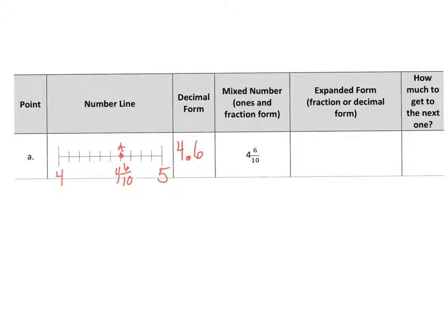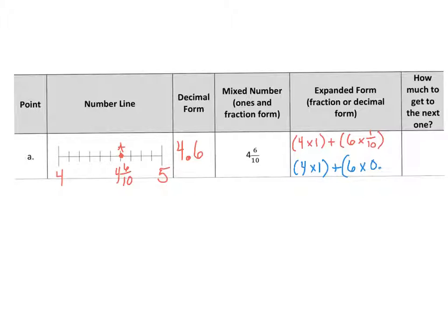What does four and six-tenths look like as an expanded form? How many ones do we have? We have four copies of one, plus how many tenths? We have six of one-tenth. That's our expanded form. Or we could write it in decimal form: four copies of one plus six copies of 0.1. How much more do we need to add to this to get to the next whole? We count: one, two, three, four — we would need four more tenths to get to the next whole. Either way of writing it is acceptable.